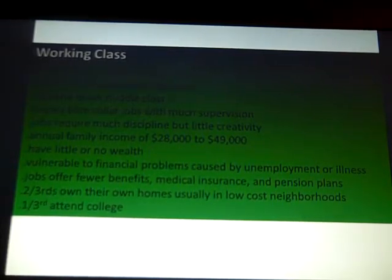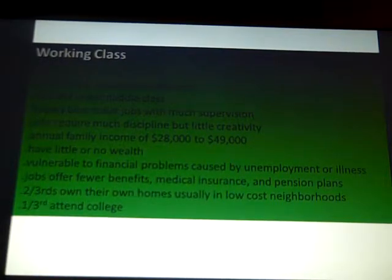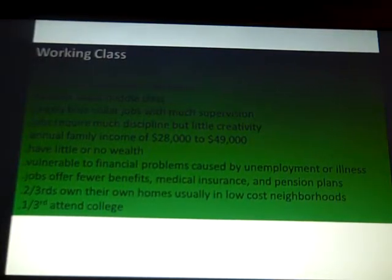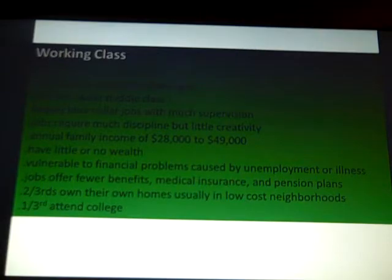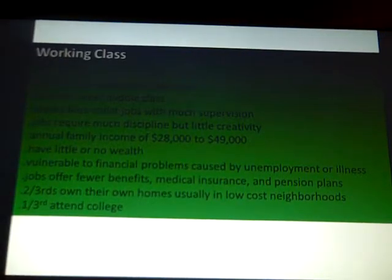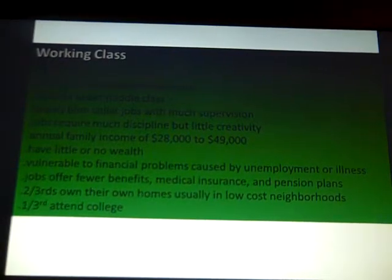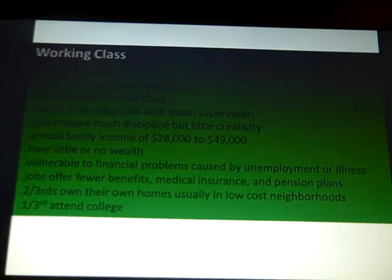Two-thirds of people in the working class own their own homes, usually in low-cost neighborhoods. Only one-third will attend college — not even talking about graduating, but will attend. People are quick to say those in the working class aren't motivated or smart enough for college, but it's more appropriate to look at access and opportunity. A lot of people in the working class may want to go to college and be capable, but they simply can't afford it.